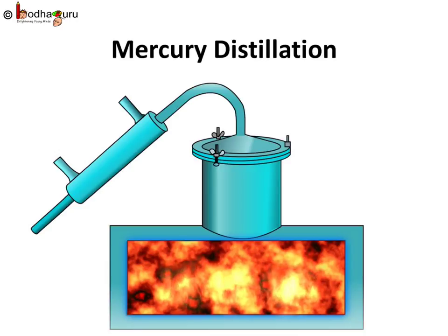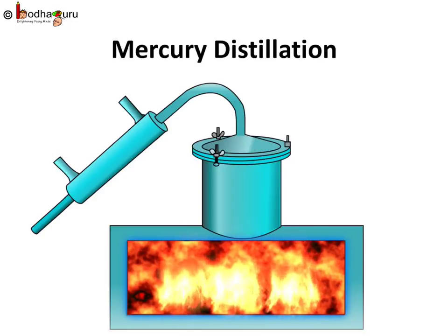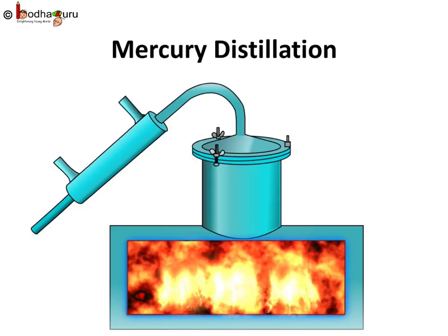Metals which have comparatively low boiling points, such as zinc and mercury, are separated from impurities using the distillation process. In this, the metal gets vaporized on boiling the crude metal, and thus gets separated from its impurities.